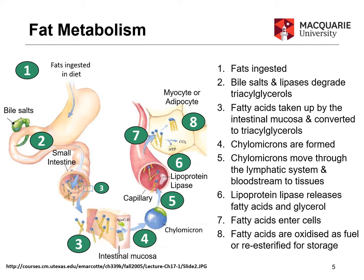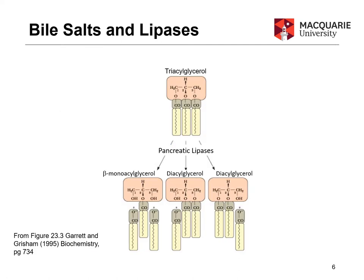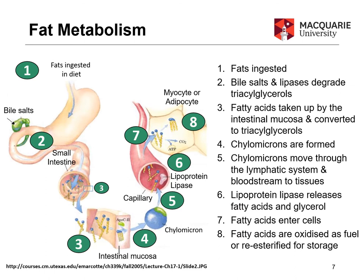Step one is ingestion of fats. Step two is the addition of bile salts and lipases to degrade the triacylglycerides. Lipases break off the fatty acid chains — they can strip off one or two at a time — so that the fatty acids can pass across the intestinal mucosa and get into the bloodstream.